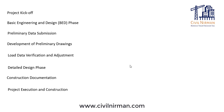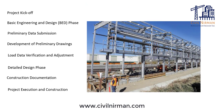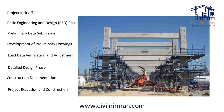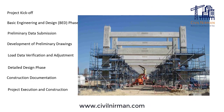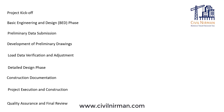Next we have project execution and construction, where the construction team begins building the pipe rack based on the finalized design documents. The engineering teams continue to provide support on site, resolving any issues that arise during construction. The last important step is quality assurance and final review, where the project undergoes QA checks to ensure it meets all safety, regulatory, and operational requirements. These nine steps give you an overall idea of how a project works in an engineering firm.